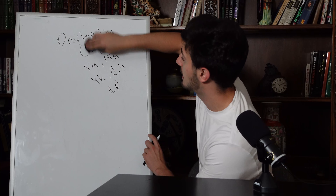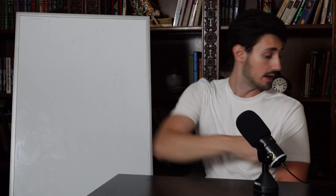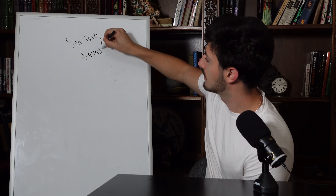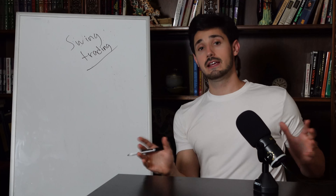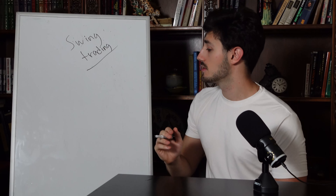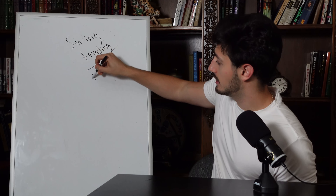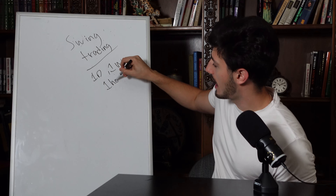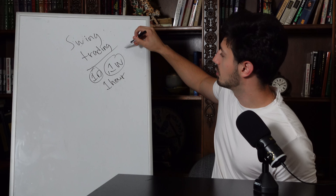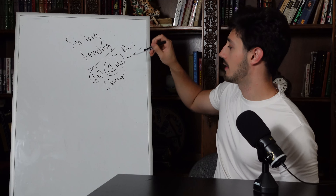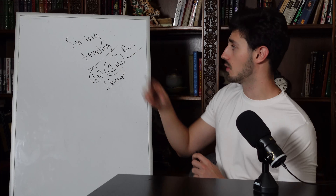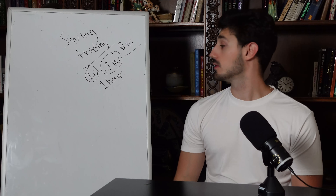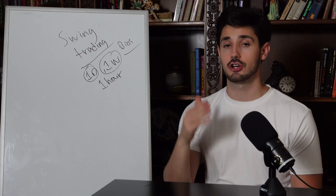For swing trading — and this applies to stocks, crypto, and forex — use the daily and weekly charts to establish your bias, and the 1-hour chart for your actual entries. Write these time frames down and make sure you are checking them before entering any single trade.